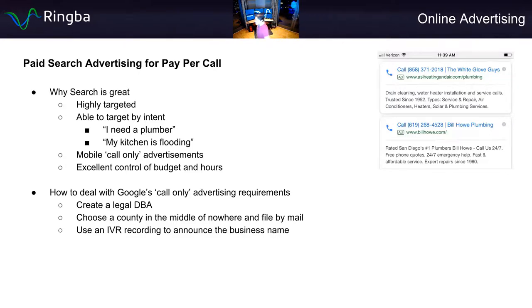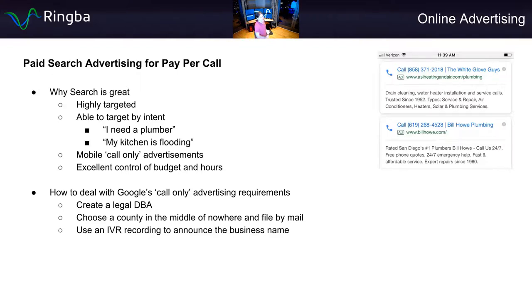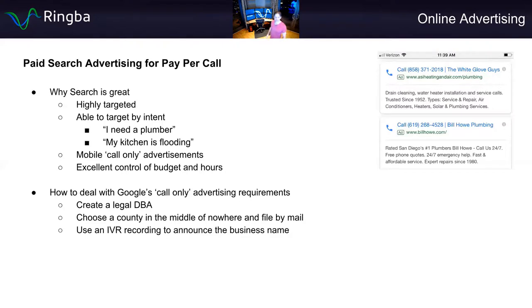With Google's new call-only advertising, I see a lot of people getting their accounts banned, and when I ask them about the rules, nine times out of ten they don't know what the rules are. The requirements are simple: you need a legal DBA — 'doing business as.' In the United States you can file a DBA form at your county level for $10–$25. Most of the time Google isn't even going to ask you for a copy, but have it ready in case. Whatever DBA you use should match the domain name or company you're actually advertising as.